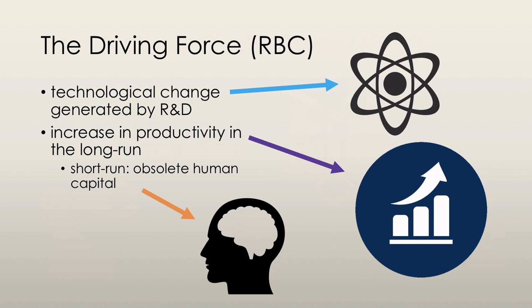These new technologies are discovered when companies invest in research and development. However, the rate of technological change is not constant, and so the rate of productivity growth is not constant. This is what causes the business cycle. A period of rapid productivity growth brings a business cycle expansion, and a period of slow productivity growth causes a recession.